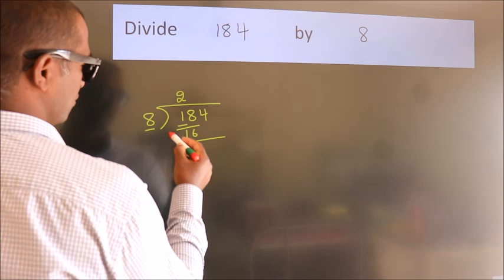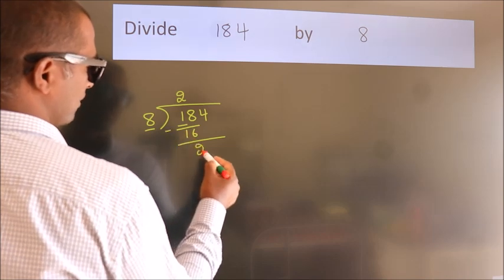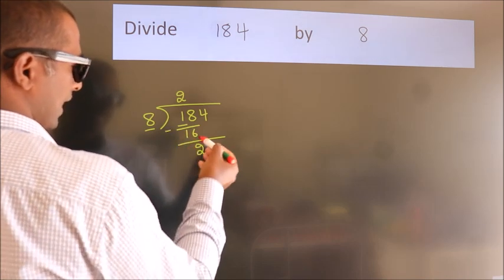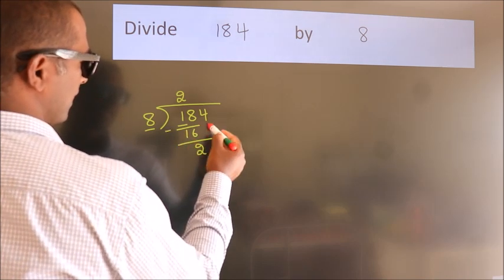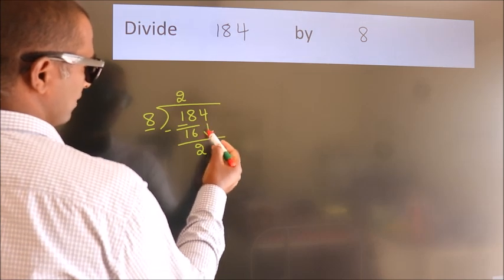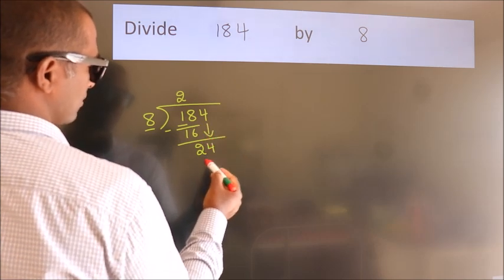Now we should subtract. We get 2. After this, bring down the next number. So 4 down. So 24.